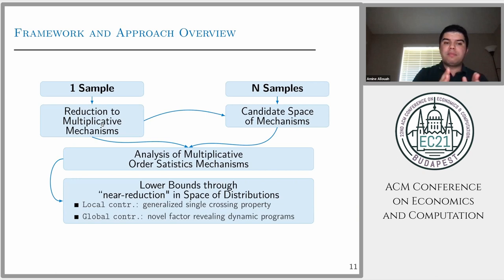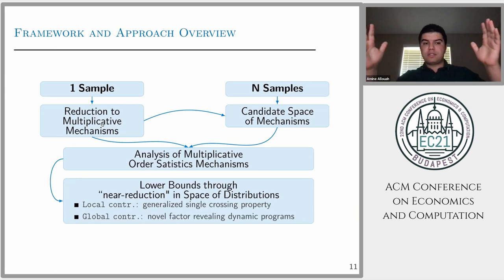The goal of these two steps is to find a lower bound on this performance. The first step is we look at local contributions, meaning we take the space of values and divide to small intervals using the generalized single crossing property for this class of distributions like MHR. We find the performance against each small interval. Then we combine these small intervals using a novel factor-revealing dynamic program. We use dynamic program techniques to combine these local contributions to get a global contribution. This is how we analyze the performance of this class of mechanisms.